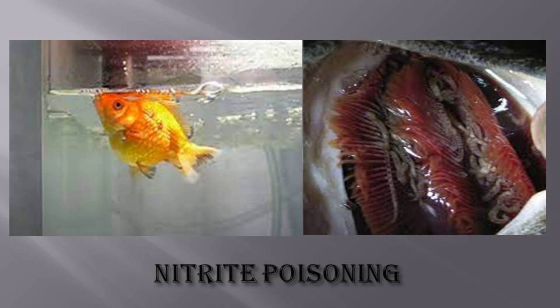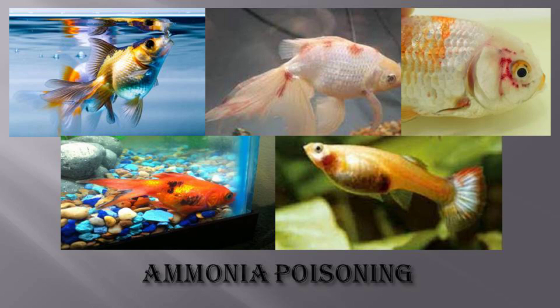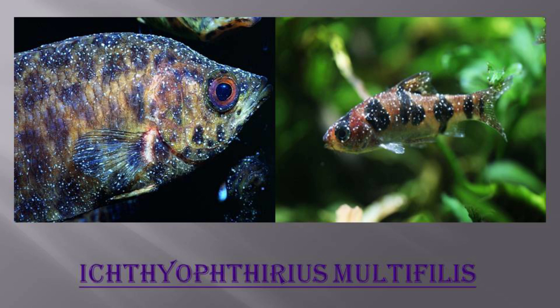First, Nitrite Poisoning. In this case, fishes gasp for breath, gills turn tan or brown, and rapid gill movement or gilling is observed. Second, Ammonia Poisoning. Here also, the fishes gasp for breath, gills turn red or purple, fish turns lethargic, fishes may lay down on the bottom, and red streaks appear on the body or fins.